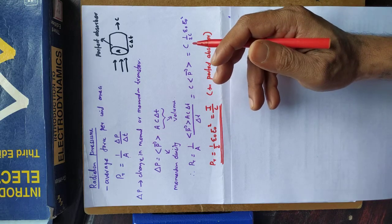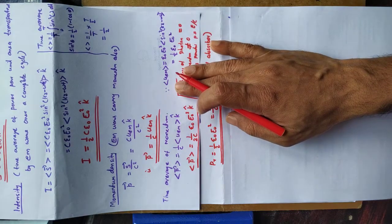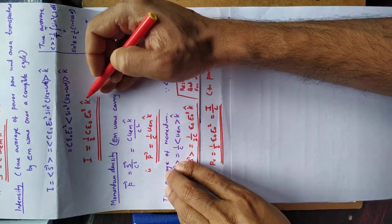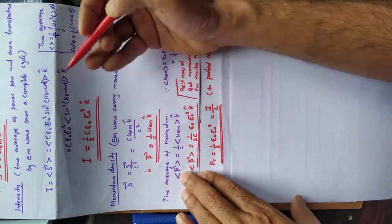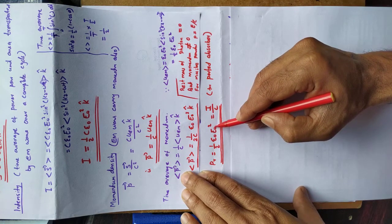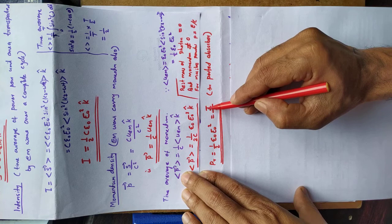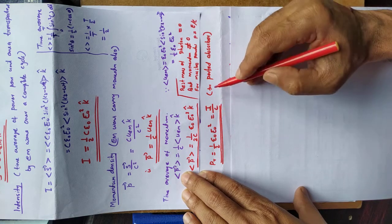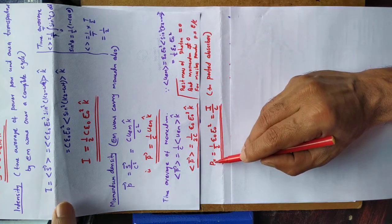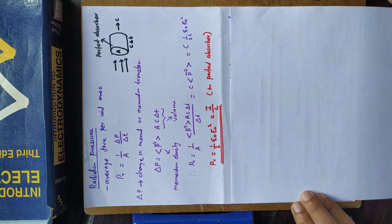We have defined intensity I as equal to half C ε₀ E₀ squared. So half ε₀ E₀ squared is equal to intensity divided by C. So, for a perfect absorber, the radiation pressure is given by its intensity divided by C.